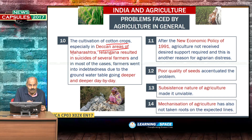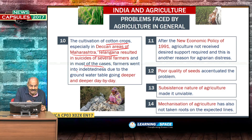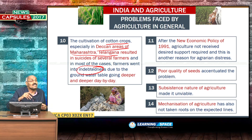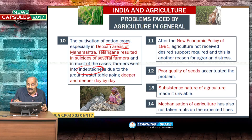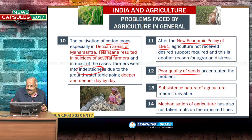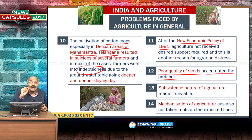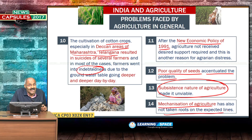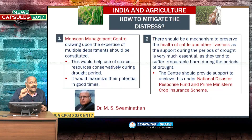The cultivation of cotton crops, especially in Deccan areas of Maharashtra and Telangana, has resulted in suicides of several farmers. In most cases, farmers went into indebtedness due to the groundwater table going deeper day by day, leading them to the extreme step of suicide. After the new economic policy, agriculture did not receive desired support. Poor quality seeds, the subsistence nature of agriculture, and the lack of mechanization further accentuated the problem.